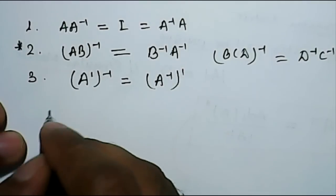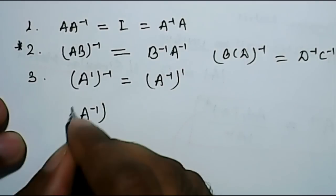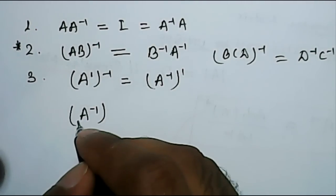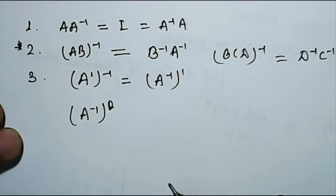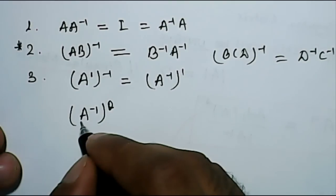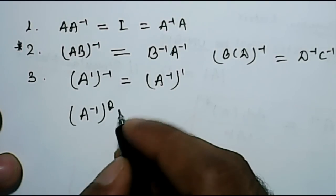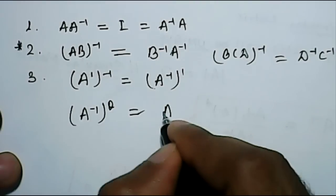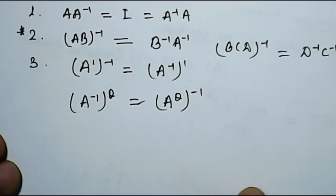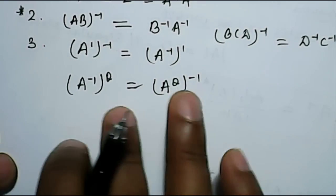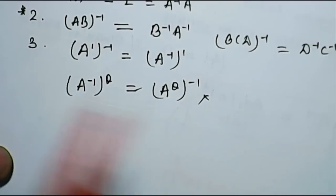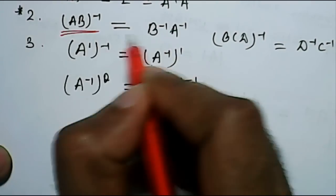Now, if you have A inverse and then complex conjugated transpose, which we studied, which we represent by theta, transposed conjugate. So, if you have A inverse and then transposed conjugate, it will be equal to the transposed conjugate and then its inverse. So, the order of operation does not matter here. These are the important properties among which this one is most important, which you should remember always.